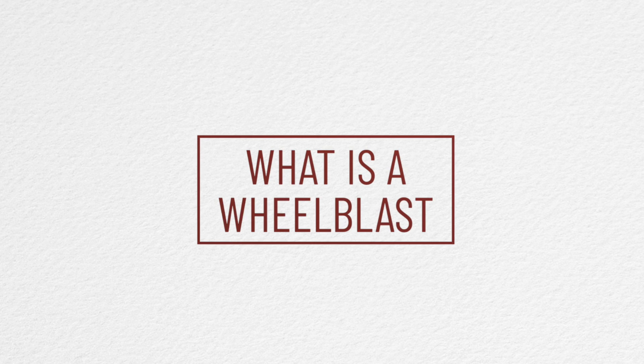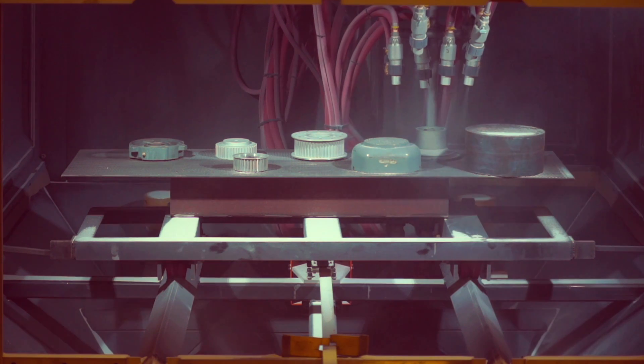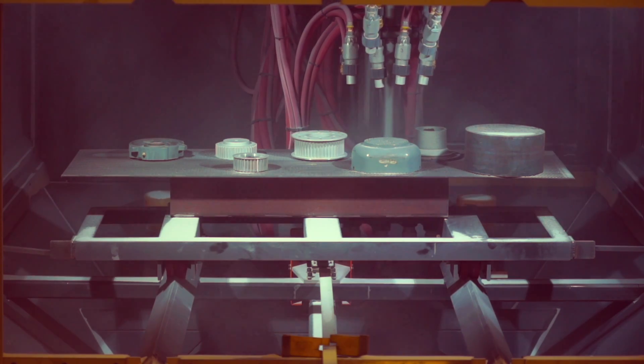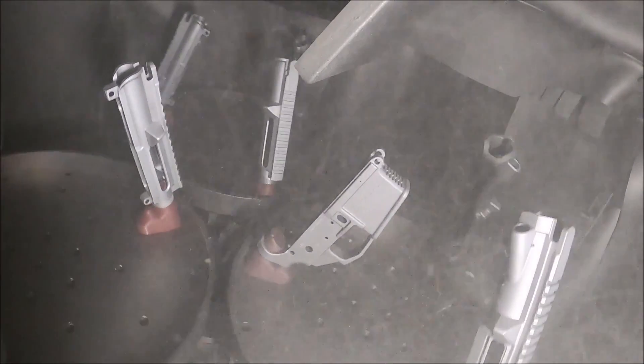But what is a Wheel Blast Machine? How does it differ from an Air Blast Cabinet? An Air Blast System pushes or sucks media through a hose by using compressed air, while a Wheel Blast System essentially throws media using a spinning wheel.